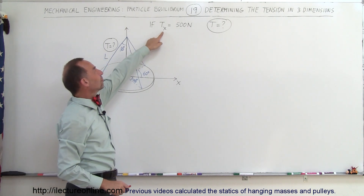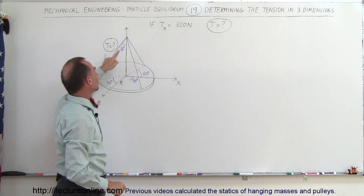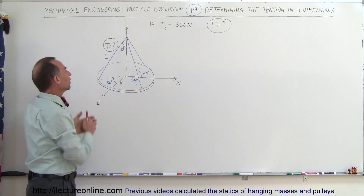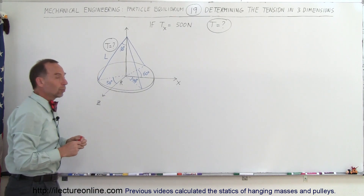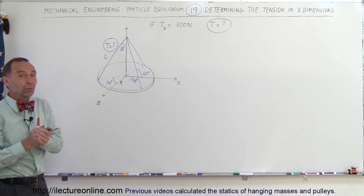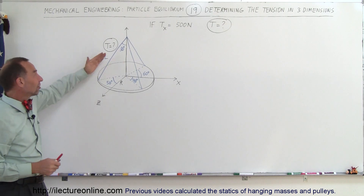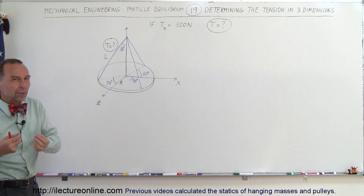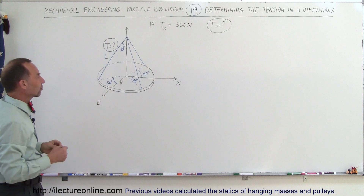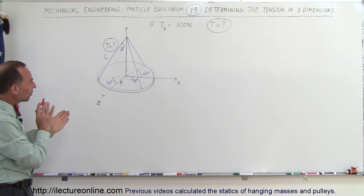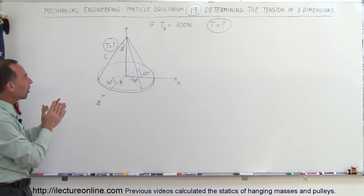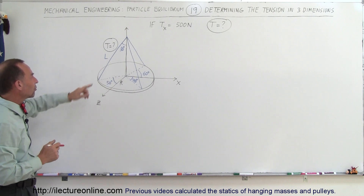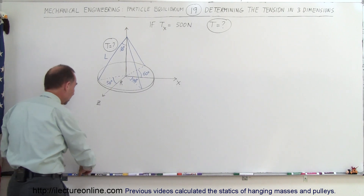We're given that the x-component of the tension in this line is equal to 500 Newtons, and from that we're supposed to find the tension in the line. This means we need to find the angles between this line and the x-axis, the y-axis, and the z-axis. We need to use direction cosines to do so, and also find the components of tension in the x, y, and z directions.